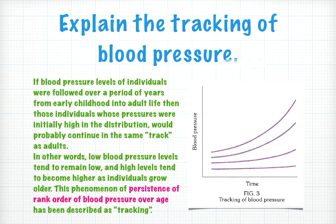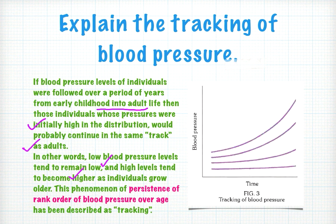The next commonly asked question is: explain the tracking of blood pressure. If blood pressure levels of individuals are followed over time from early childhood to adult life, those whose pressure was initially high will tend to remain high. Low blood pressure levels tend to remain low, and high blood pressure levels tend to increase further with age. This phenomenon of persistence of rank order of blood pressure over age is described as tracking.